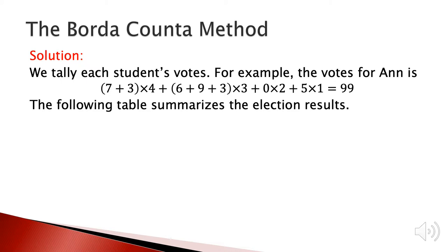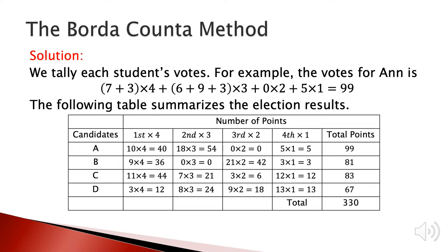Similarly, we calculate the total points for the other candidates and summarize the results in the following table. A has 99 points, B has 81 points, C has 83 points, and D has 67 points. After comparison, A has the most points, so A is the winner based on the Borda count method.